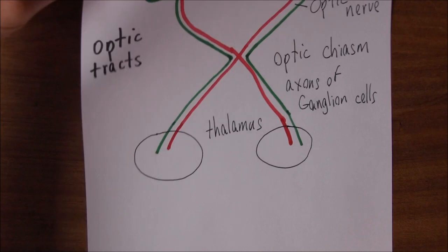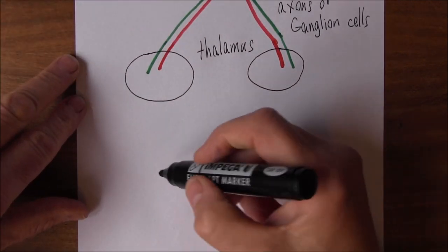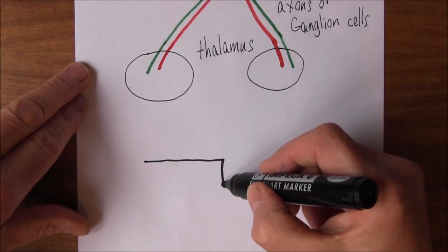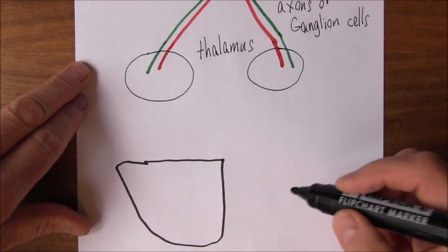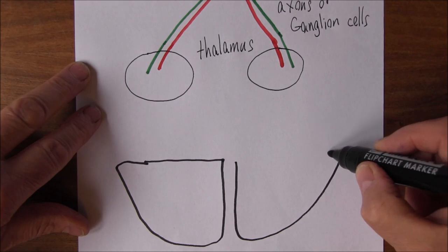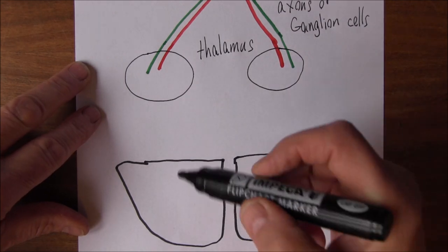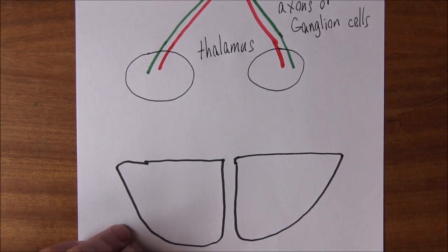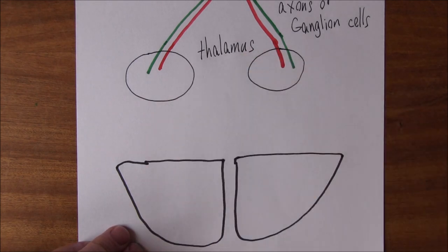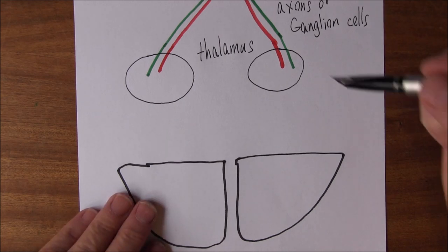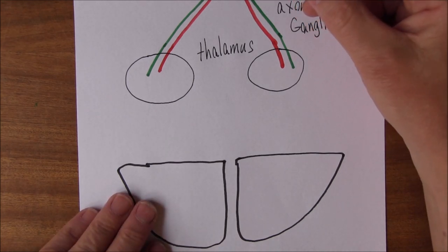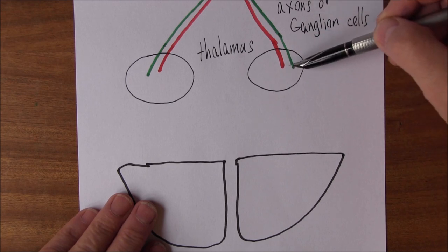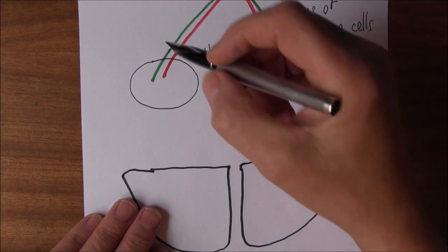The occipital lobes of the brain are at the very back of the brain, here, in their two hemispheres. These are the occipital lobes. The neurons from the ganglion cells terminate in the thalamus, and then there's another set of neurons that carry the information back towards the brain.